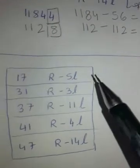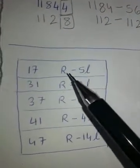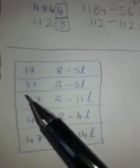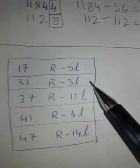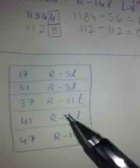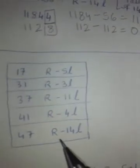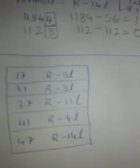Here is the ready table. What we learnt in today's tutorial: for 17 it is R-5L, for 31 R-3L, for 37 R-11L, for 41 R-4L, for 47 R-14L.